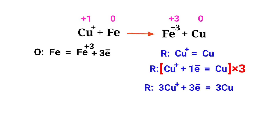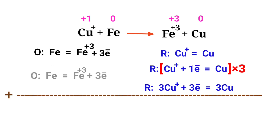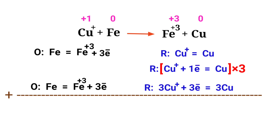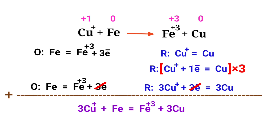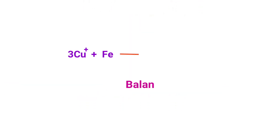Now you can add both reactions together, then cancel the same terms on each side to arrive at the final balanced equation.